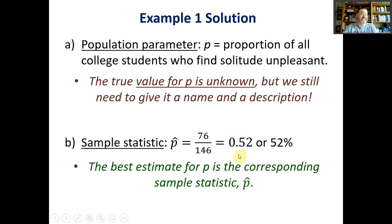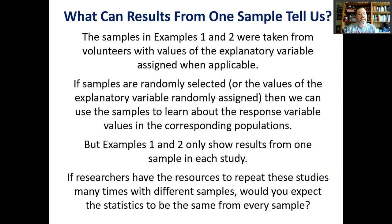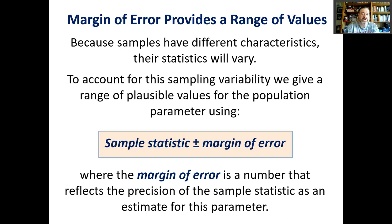We would think some people don't like sitting by themselves without a phone, and not everyone dislikes it either. If researchers take lots and lots of samples, they can create a sampling distribution by repeated sampling. Because all these samples have different characteristics, their statistics will vary. To account for this sampling variability, we give a range of plausible values for the population parameter using the formula: sample statistic plus or minus the margin of error, where the margin of error is a number that reflects the precision of the sample statistic as an estimate for the parameter.